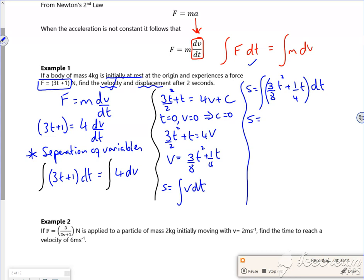So it's going to be, well that's going to be 3 over 8t cubed over 3, so that's an eighth t cubed, a quarter t squared over 2, so that's going to be an eighth t squared plus c plus a constant. So initially it's at the origin, so s equals 0, t equals 0.